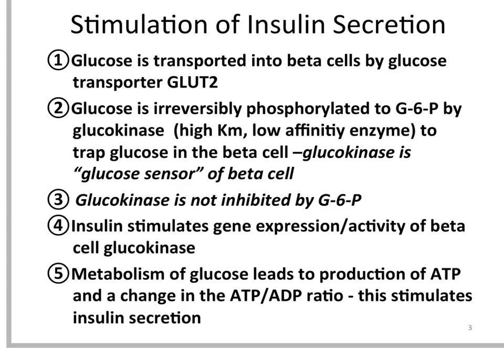Glucokinase, opposite to hexokinase, is not inhibited by its product, glucose 6-phosphate. Insulin stimulates the gene expression and the activity of beta cell glucokinase. The metabolism of glucose leads to a change in the ATP-ADP ratio, so glucose needs to be metabolized in order for insulin secretion to occur.